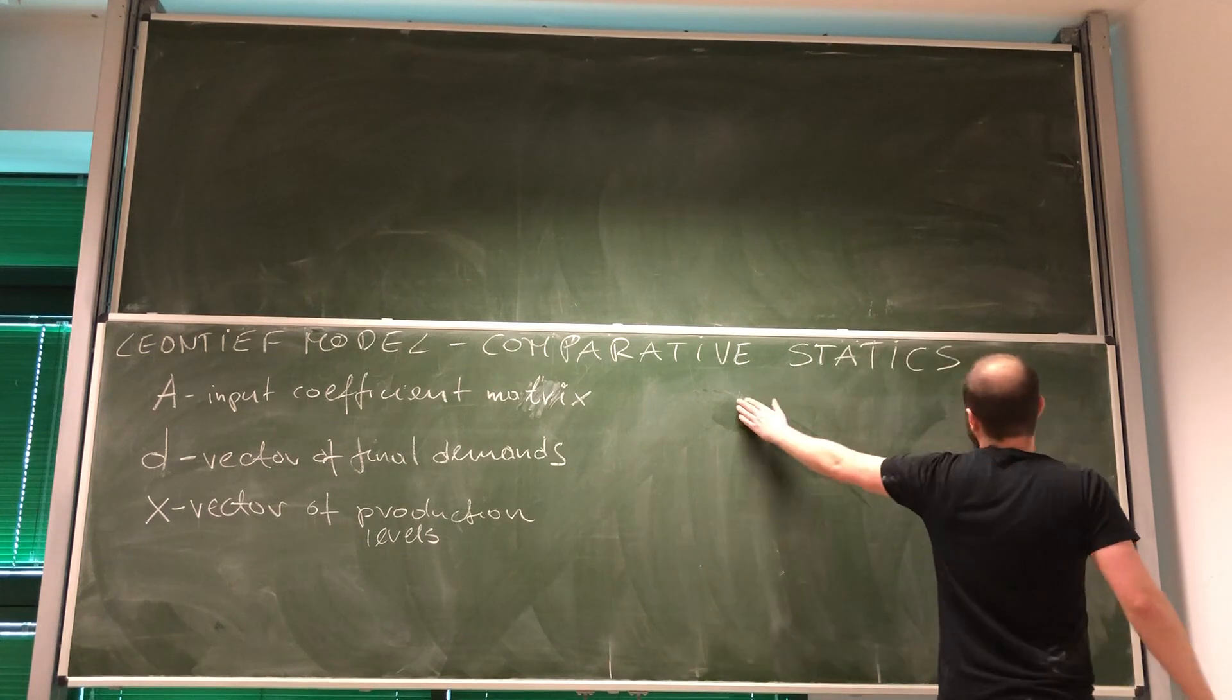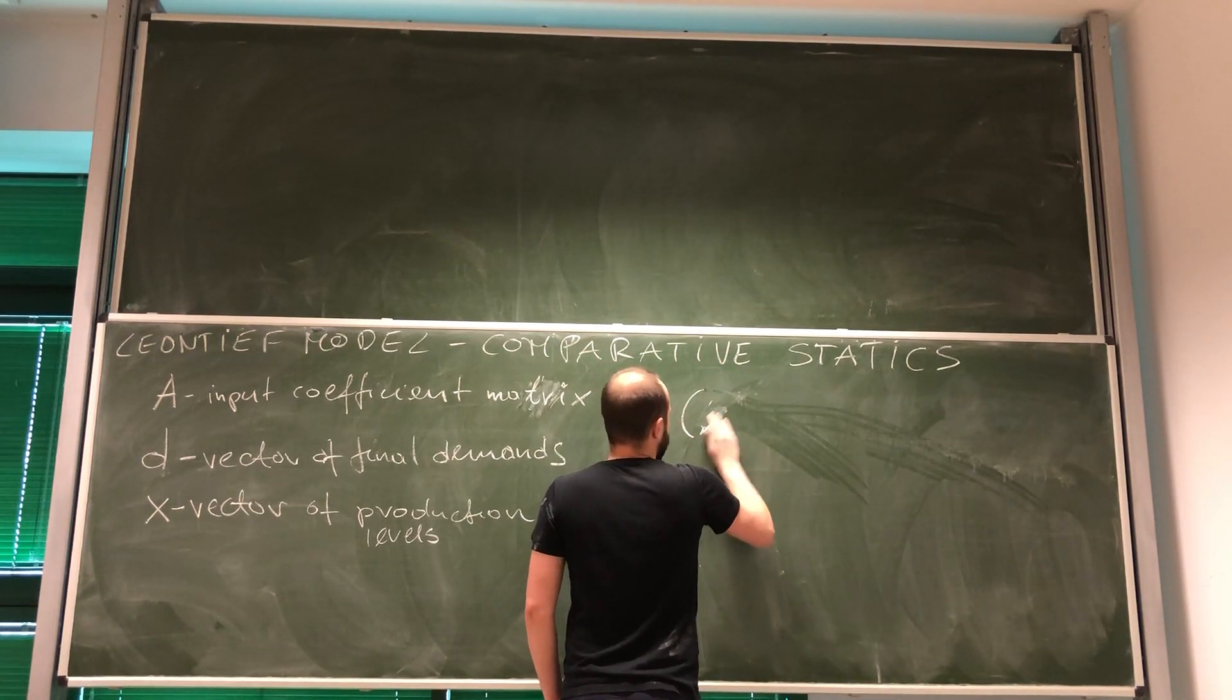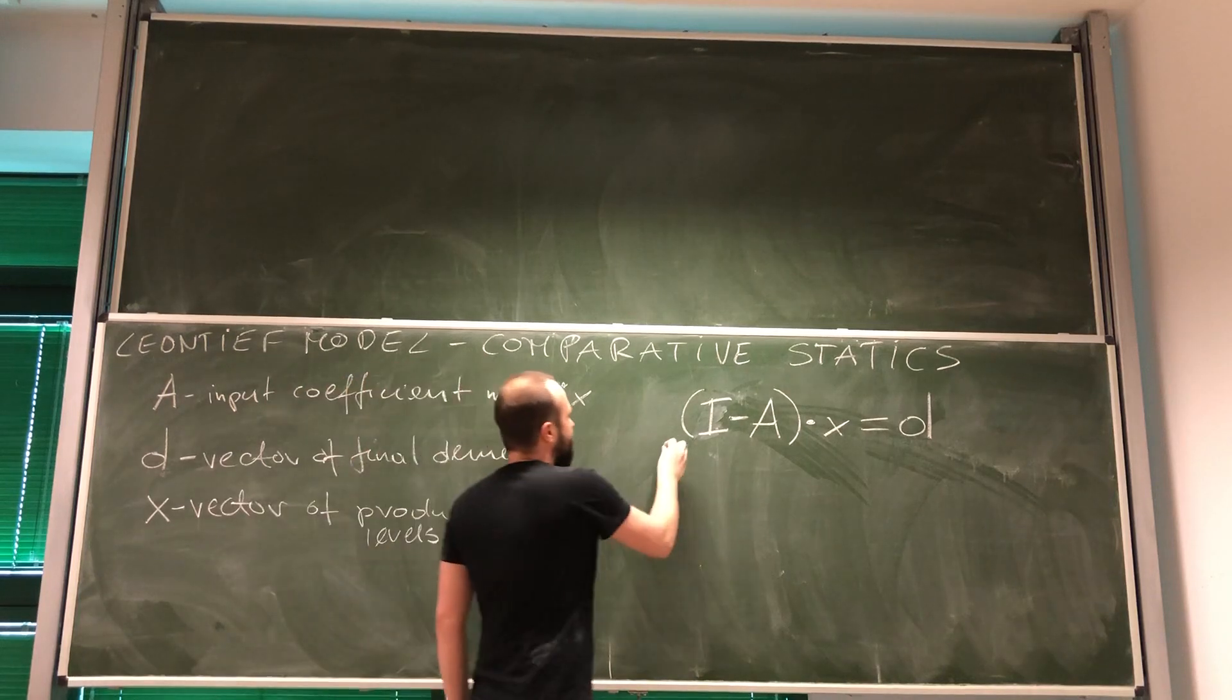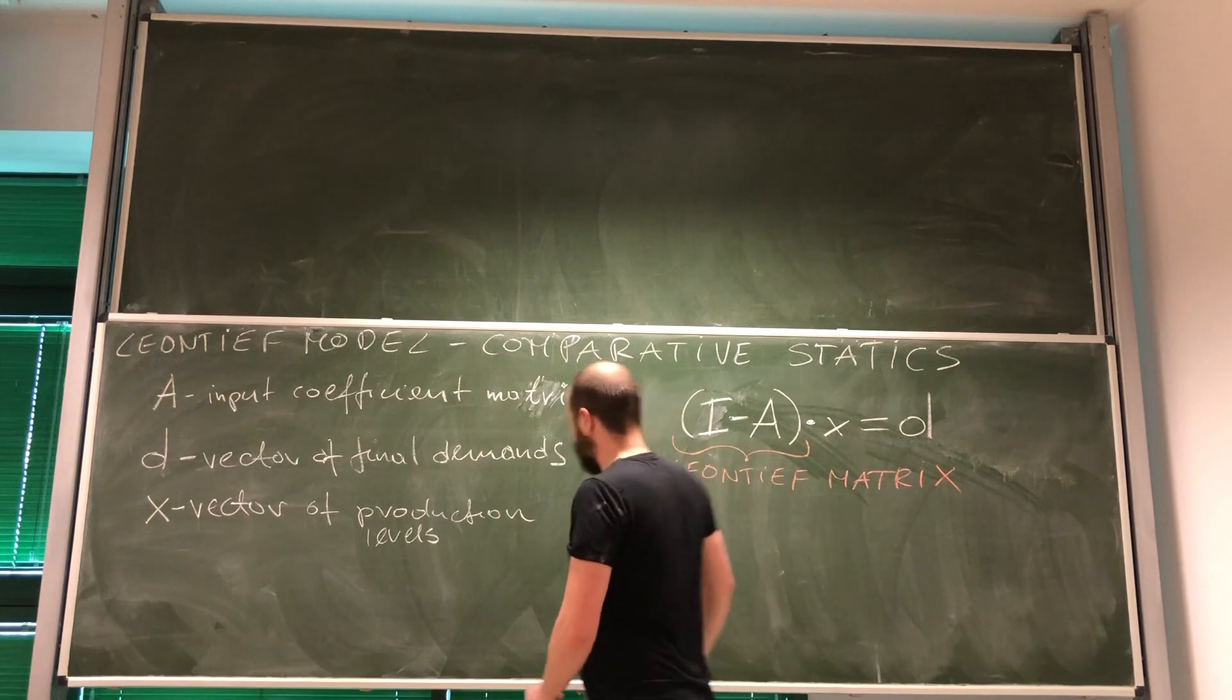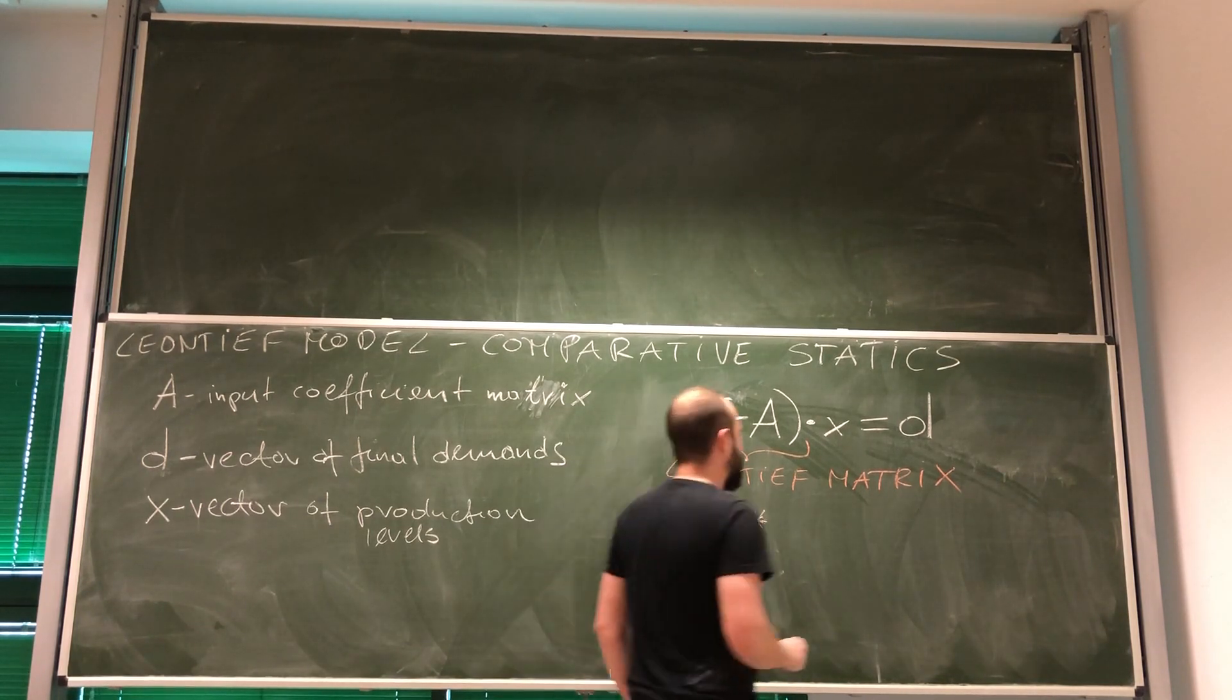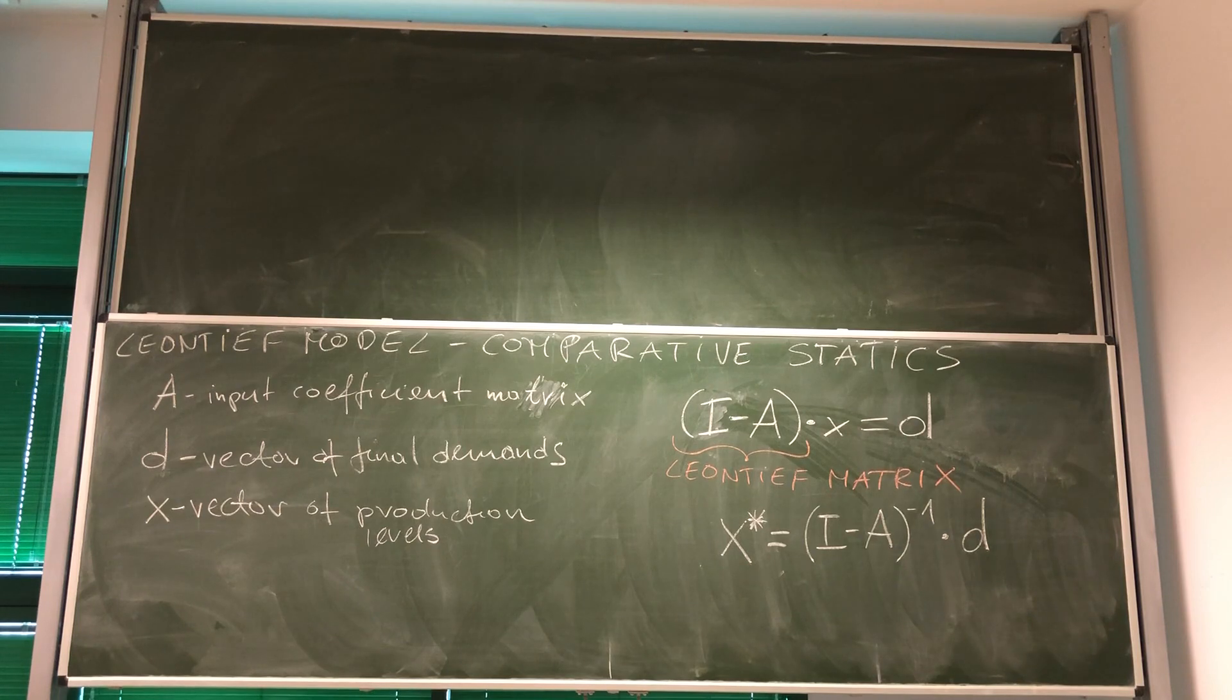We've established that to actually calculate these production levels, we need to solve this equation. And I minus A was called LTF matrix. Now, having calculated LTF matrix, the solution, so vector of solution, vector of levels of production, is given by I minus A inverse times vector of final demands D.